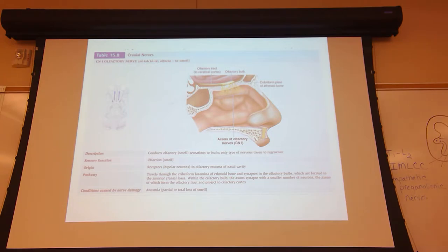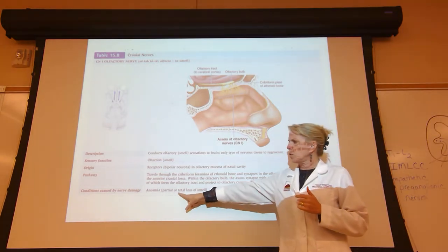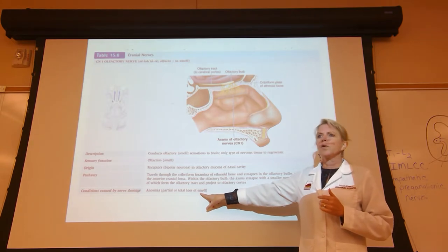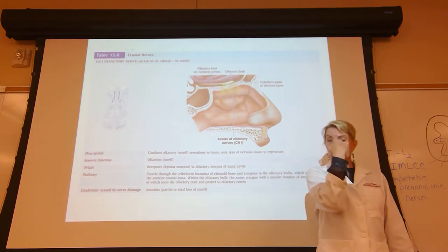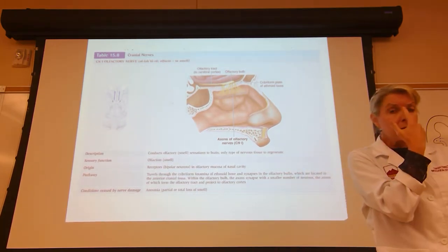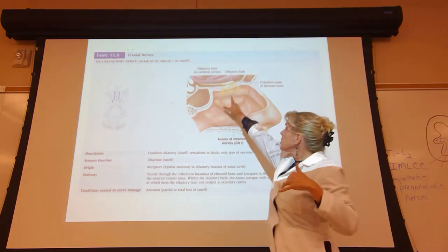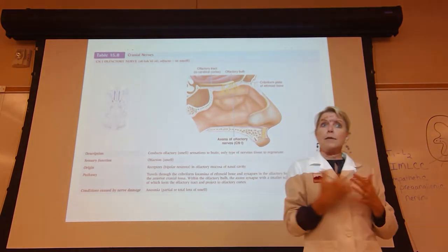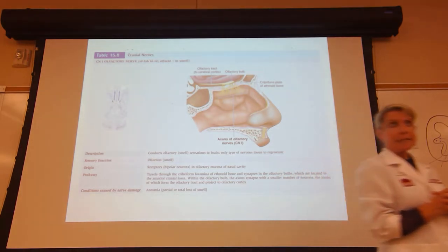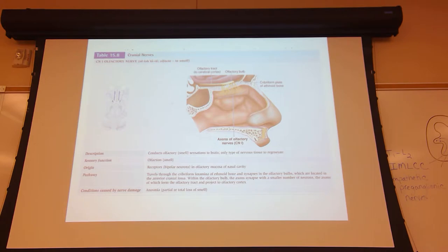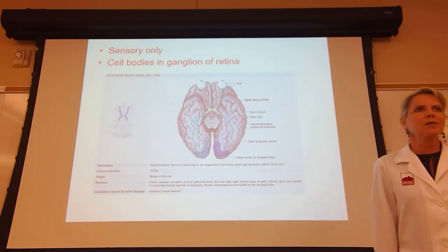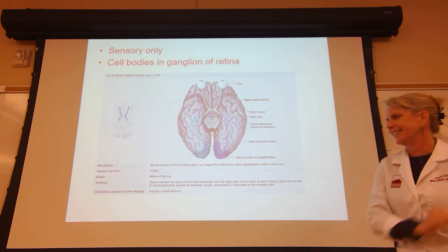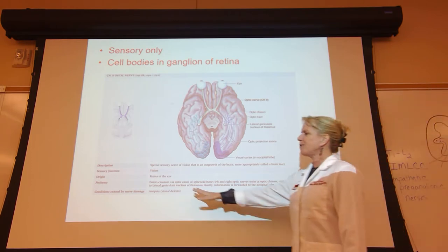Cranial nerve II is the optic nerve — sensory only, for vision. Damage to the optic nerve will cause visual defects. Cranial nerve III is the oculomotor — its name tells you what it does: moves the eye. The oculomotor nerve innervates four out of the six extraocular muscles: superior rectus, inferior rectus, medial rectus, and inferior oblique.